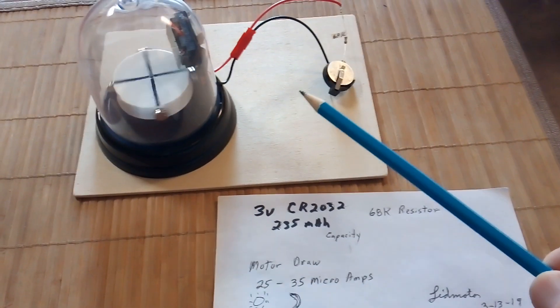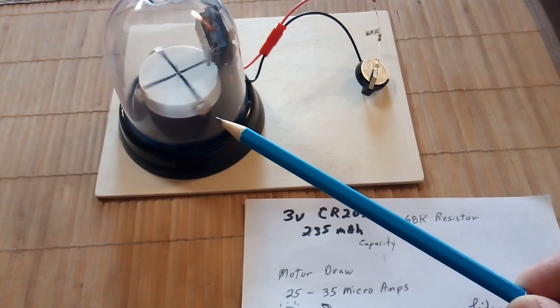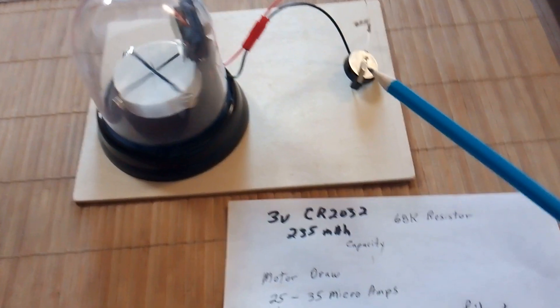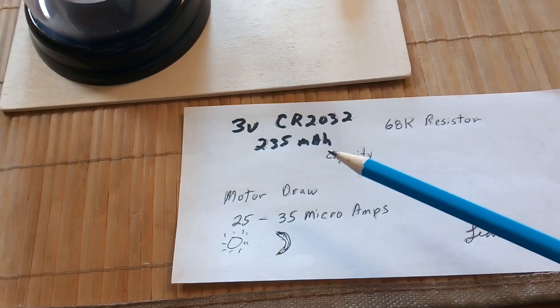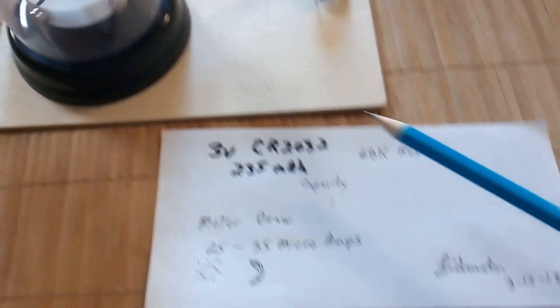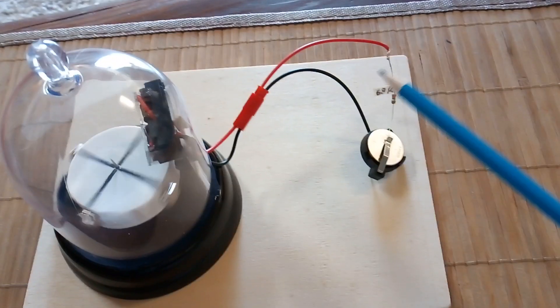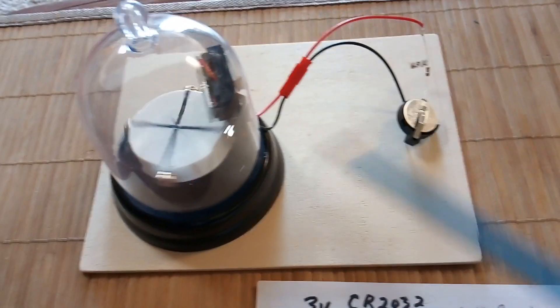This motor here has the levitated rotor and it's a lithium battery. This is a 3 volt, 235 milliamp per hour capacity with a 68k dropping resistor to drop the power down to where this thing isn't overpowered.